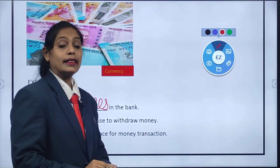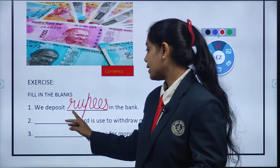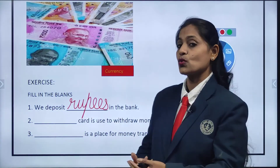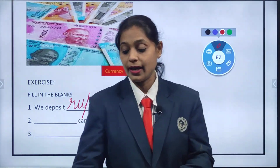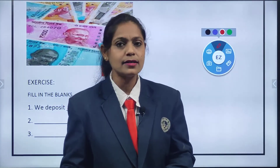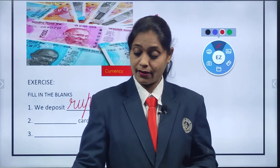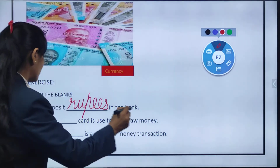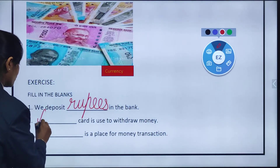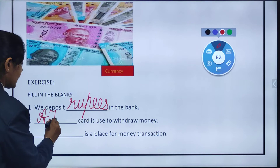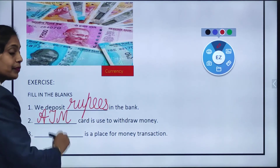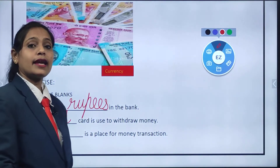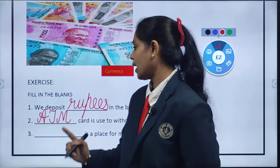The next blank is: dash card is used to withdraw money. Yes, we have already learned this. To withdraw money, what card do we use? ATM. What card we use children? ATM. So we are going to write here A, then capital T and capital M — that is ATM.